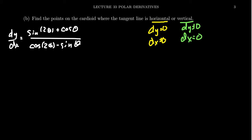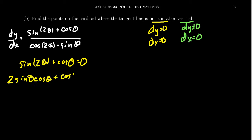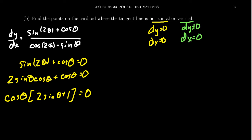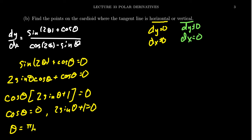Let's solve for when the numerator equals 0: sine of 2 theta plus cosine theta equals 0. Replacing sine of 2 theta with 2 sine theta cosine theta, we can factor out cosine theta, leaving 2 sine theta plus 1. By the zero product property, cosine theta equals 0, or 2 sine theta plus 1 equals 0. Cosine equals 0 at the top and bottom of the unit circle: pi halves and 3 pi halves, plus coterminal angles.